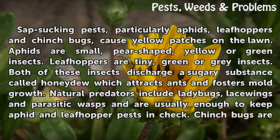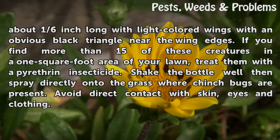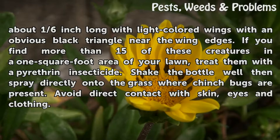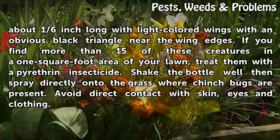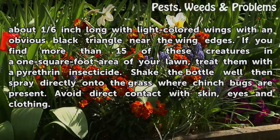Chinch bugs are about one-sixth inch long with light-colored wings with an obvious black triangle near the wing edges. If you find more than 15 of these creatures in a one square foot area of your lawn, treat them with a pyrethrin insecticide. Shake the bottle well, then spray directly onto the grass where chinch bugs are present. Avoid direct contact with skin, eyes and clothing.